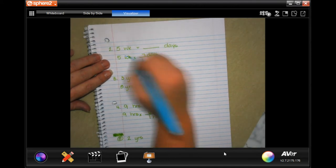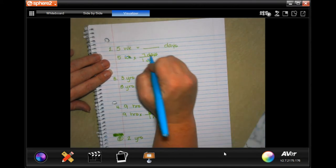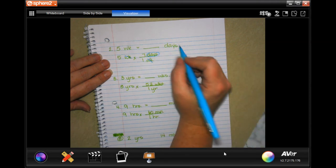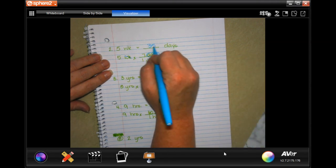We're going to cancel out our weeks and we end in days, which is what we want. Then five times seven is 35.